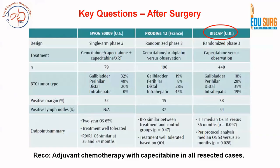Coming to key questions on adjuvant therapy: adjuvant therapy with capecitabine is recommended in all resected cases, and the landmark trial in this regard is the BILCAP trial — a randomized phase 3 trial comparing capecitabine versus observation. Before the BILCAP trial, gemcitabine was the agent of choice; however, we now prefer capecitabine. It is tablet-based, easier for patients, compliance is better, and outcomes are good.